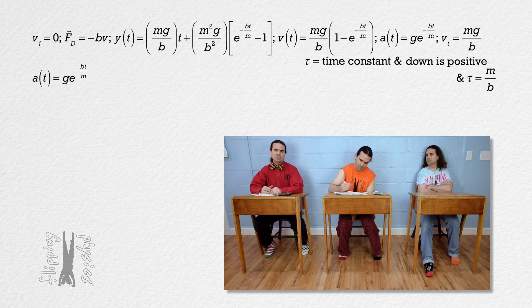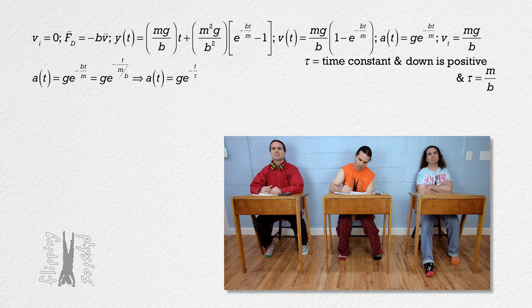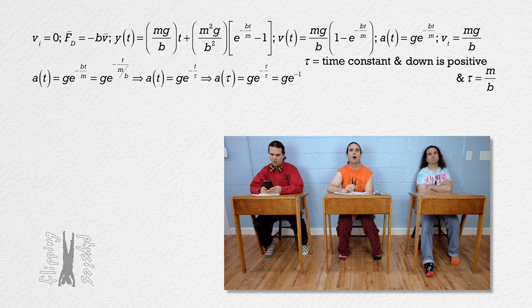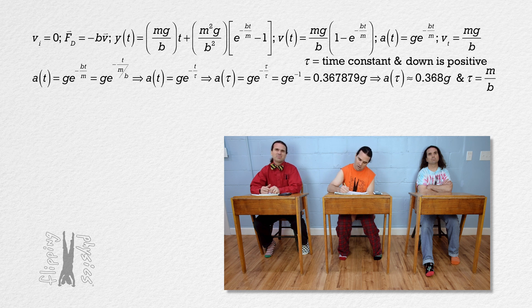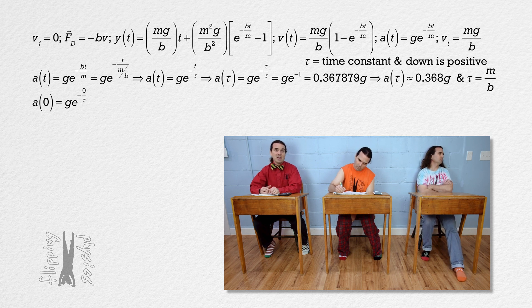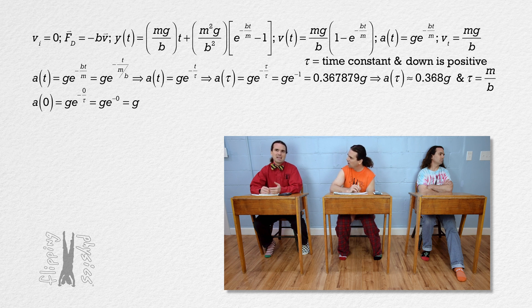Acceleration as a function of time for an object in free fall that starts with an initial velocity of zero equals acceleration due to gravity times e to the power — in terms of time constants — negative time over time constant. When we plug in one time constant for time, we get e to the power negative time constant over time constant, or e to the negative one, or 0.367879, or 0.368 times the acceleration due to gravity. The initial acceleration of the ball at time equals zero equals acceleration due to gravity times e to the power negative zero over the time constant; e to the power 0 equals 1. So the initial acceleration of the ball equals the acceleration due to gravity.